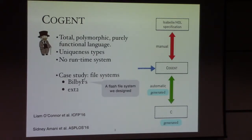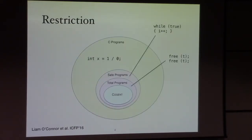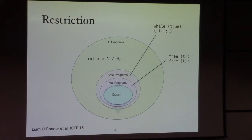We also look at the second extended file system, ext2. Cogent is very restrictive. The expressiveness is basically a substantially smaller subset of C, which excludes unsafe programs, excludes partial programs, and excludes those that violate the uniqueness constraints. Fortunately, we can still implement file systems using Cogent.